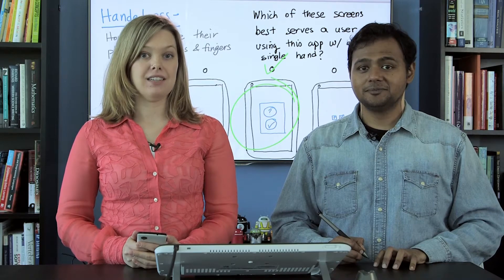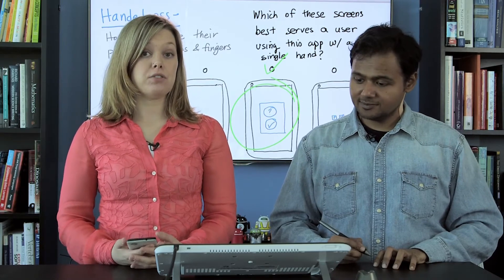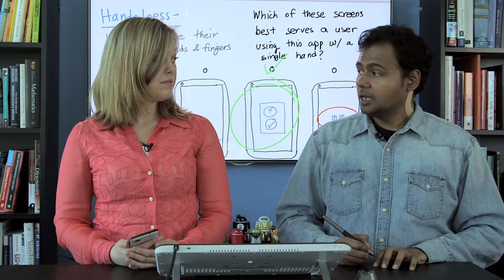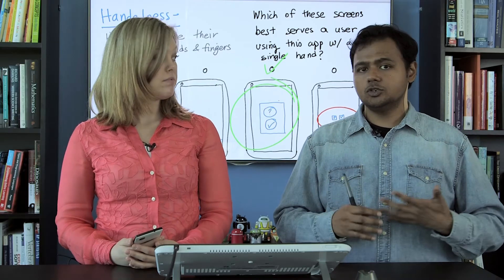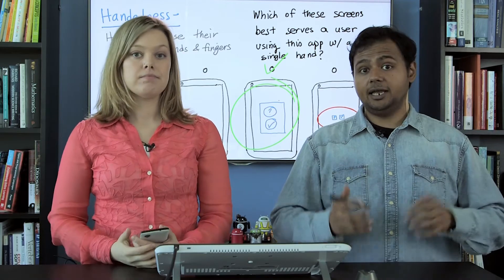Let's dig a little deeper into handedness and review the answers on the quiz. The correct one here is good because the touch targets are nice and big, and they're in a place that's really easy to touch if you're using a phone with one hand. The one on the right has really tiny touch targets, so they're going to be really hard to press. On phones you should try and have a 48 dip minimum touch target and lots of padding.